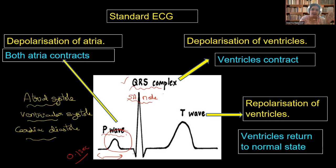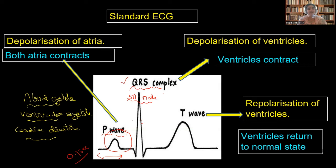At the end of the P wave, the atrial systole ends and the ventricular systole begins. The ventricular systole contains three steps: first, the AV valves open, sending blood from the auricles into the ventricles; then the semilunar valves open, sending blood from the respective ventricles to the respective arteries — from the right ventricle to the pulmonary artery, and from the left ventricle to the aorta; then the semilunar valves get closed and the ventricles relax. All these events during ventricular contraction are represented by the QRS complex.